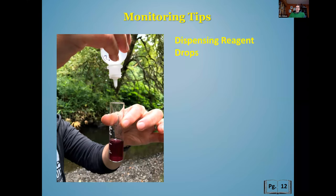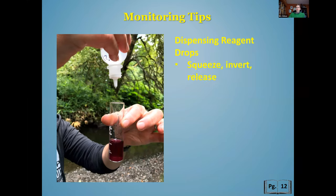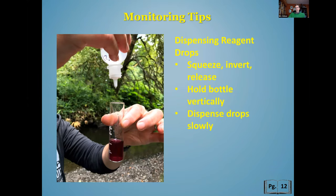Most of the tests are titration-based, which means you're adding a little bit of something until you see a change. You'll be dispensing drops from reagent bottles. The technique is to squeeze the bottle, invert it, release it so it draws in a little air, and then start dispensing the drops. Otherwise they may come out too quickly to count. Remember: squeeze, invert, release, dispense.